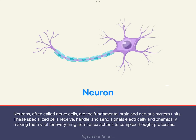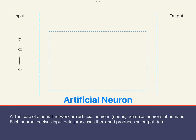A human neuron receives external stimuli, generates signals, processes them, then transmits them to other neurons. In the AI neural network, the smallest unit is also called a neuron, which receives signals, processes them, and then transmits them to the next layer of neurons.